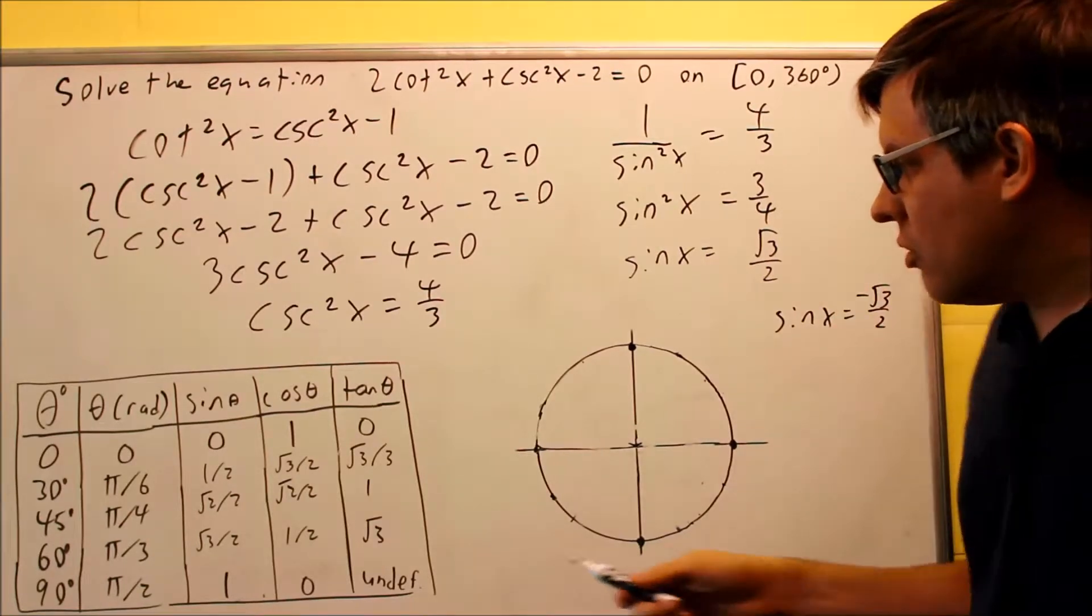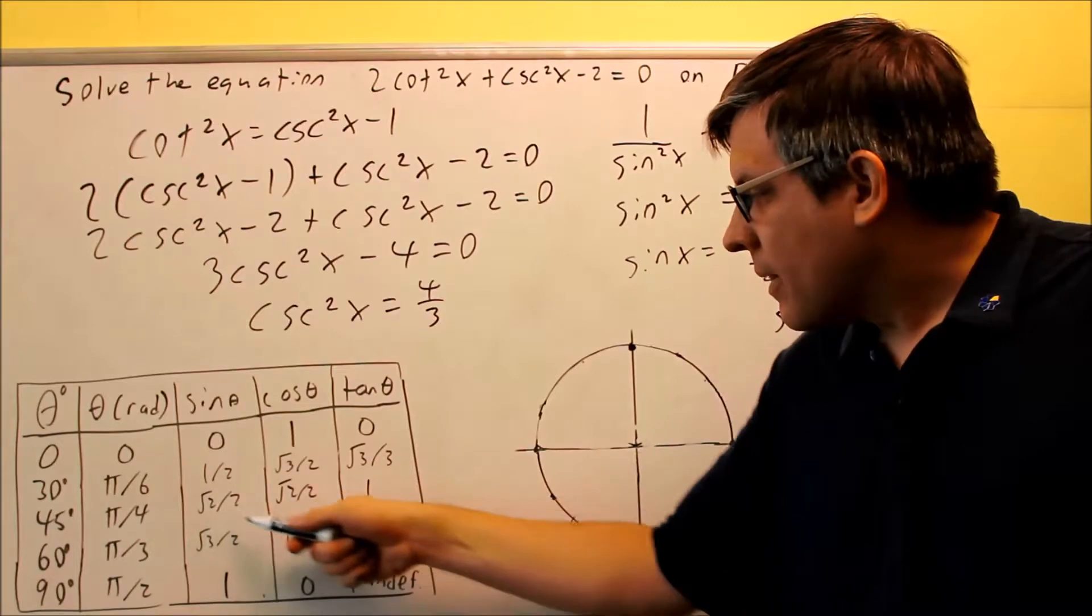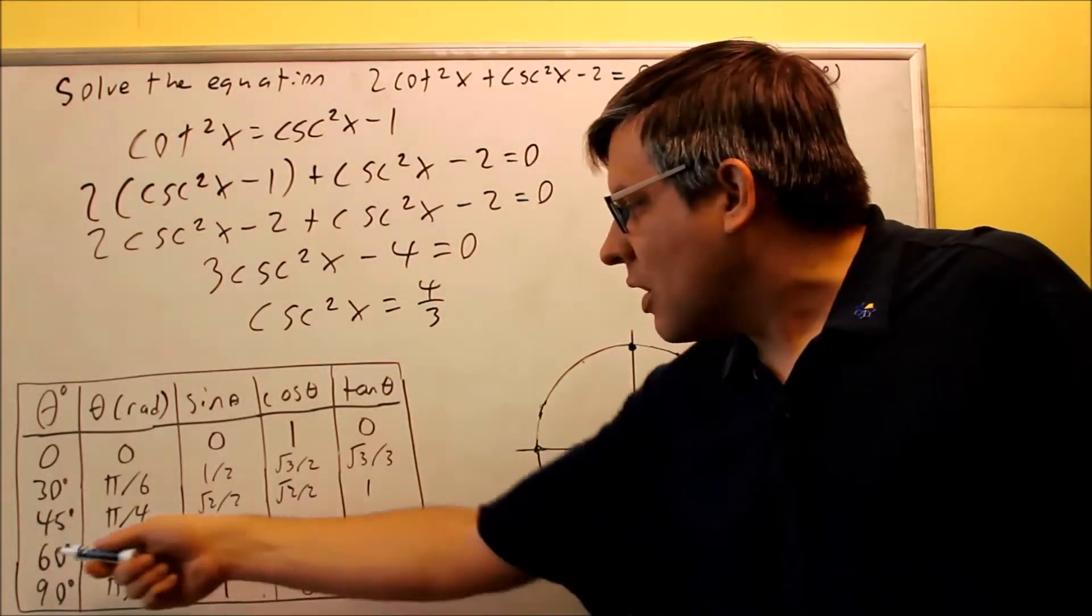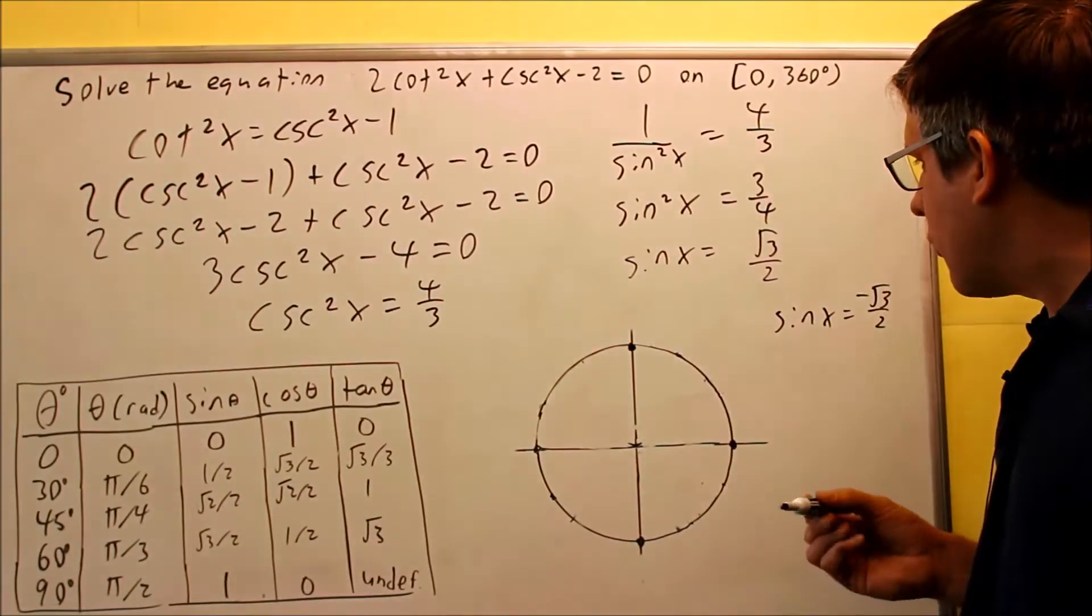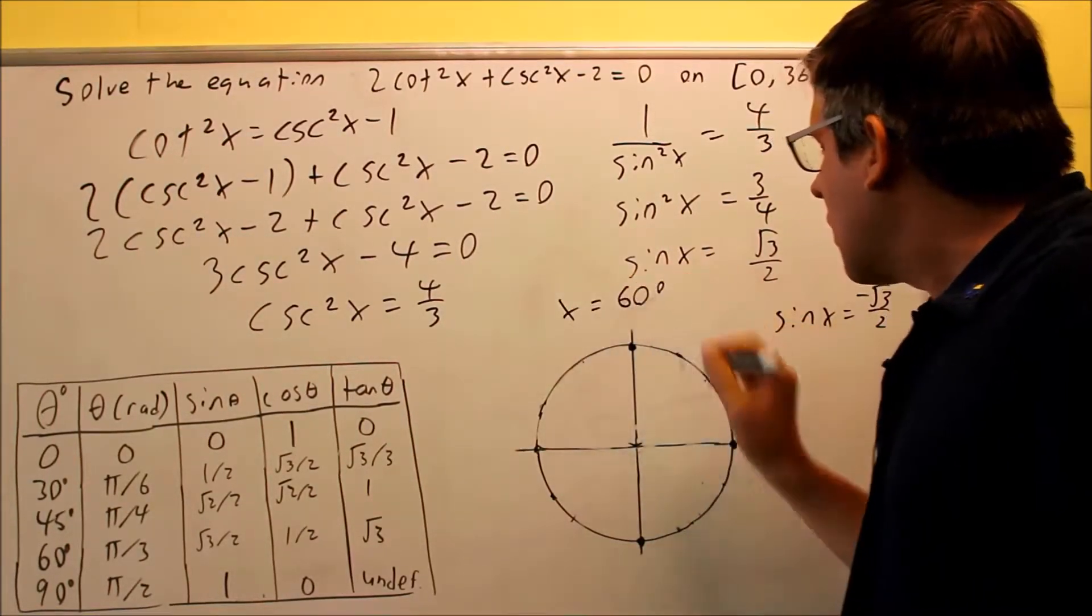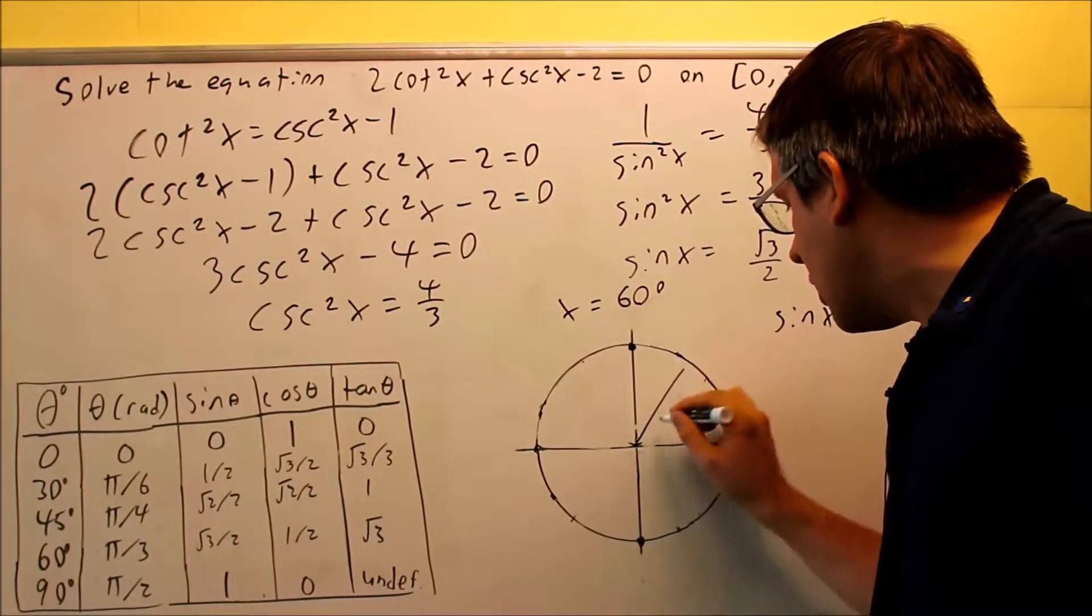For square root of 3 over 2 I look in the sine column, square root of 3 over 2 is right here and I'm working with degrees this time which means that that's going to be 60 degrees. I know that for sure one of the answers for x here is going to be 60 degrees. I can get that directly off of the table and that value is going to be right here.